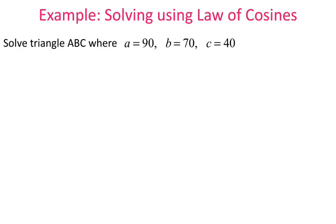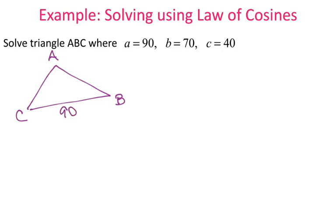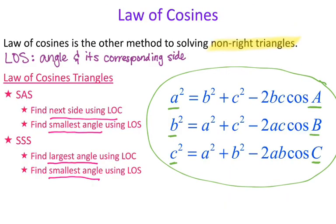For the next example, solve triangle ABC where A is 90, B is 70, and C is 40. That gives me all three sides — so this is a side-side-side triangle. For a side-side-side triangle, I need to find the largest angle using law of cosines first. My largest side is 90, so I'll solve for angle A.